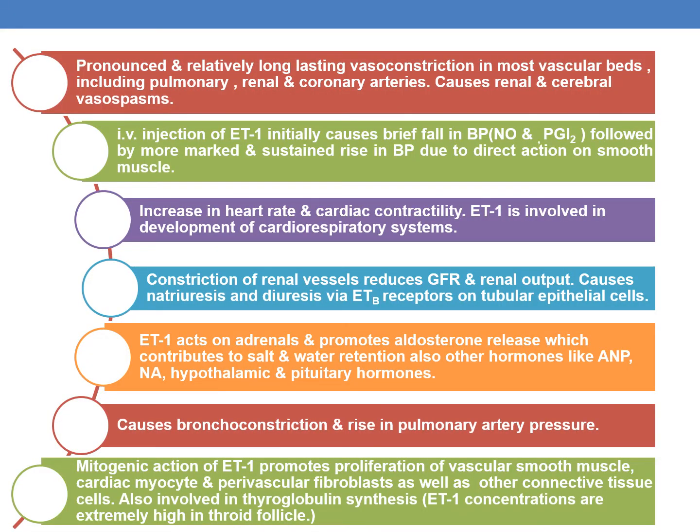Pronounced and relatively long-lasting vasoconstriction in most vascular beds is seen including pulmonary, renal, and coronary arteries. ET1 causes renal and cerebral vasospasms. IV injection of ET1 initially causes a brief fall in BP due to the release of nitric oxide and prostaglandin I2, followed by a more marked and sustained rise in BP due to direct action on smooth muscle. The initial fall in BP is mediated by the ETB receptor via release of nitric oxide and PGI2.